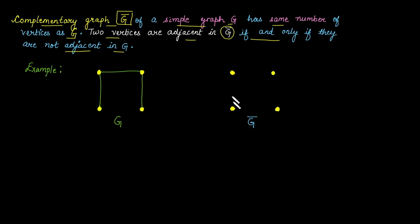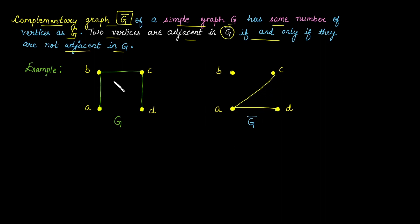There are four vertices, so G-bar also has four vertices: A, B, C, and D. Now we find the adjacent vertices in the complementary graph. Vertex A is adjacent with B but not with C and D in G, so in G-bar, A is adjacent with C and D. Vertex B is adjacent with C and A in G, so in G-bar, B is adjacent with D. Similarly for vertex C, which is adjacent with B and D in G, so in G-bar it is adjacent with A.